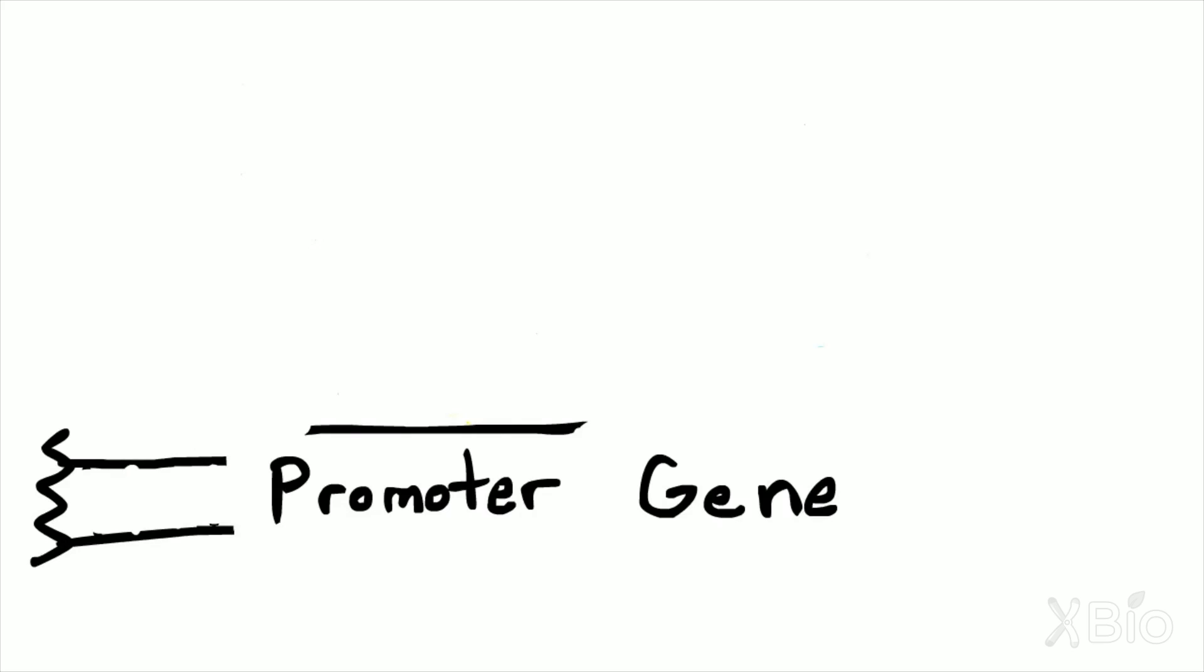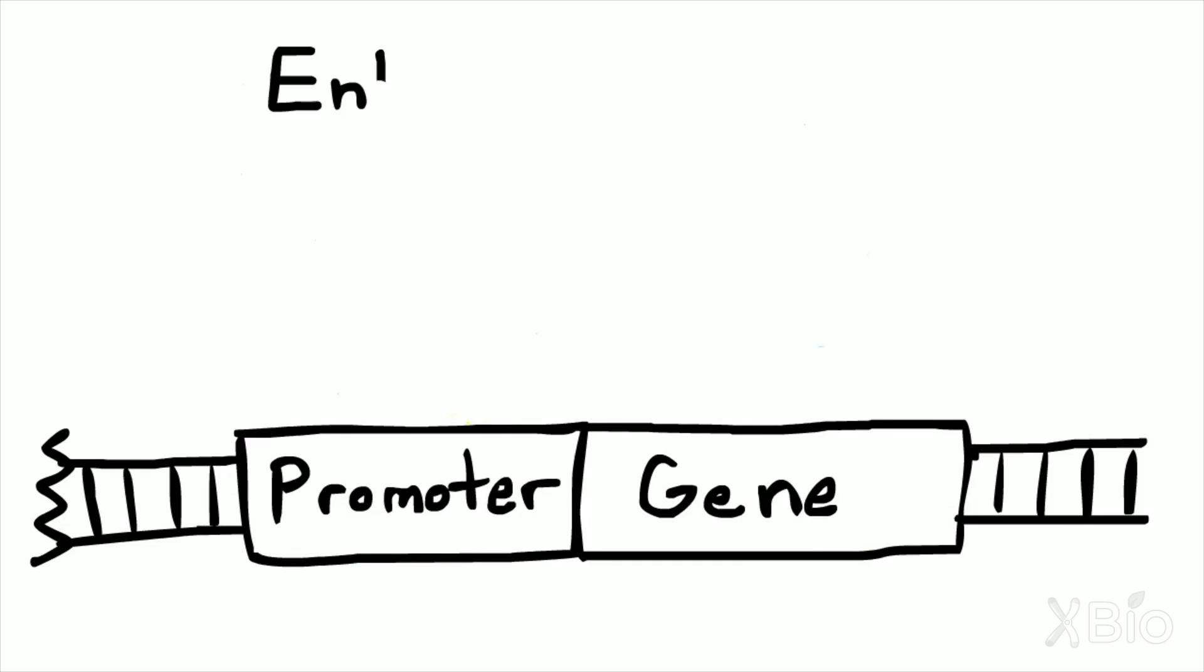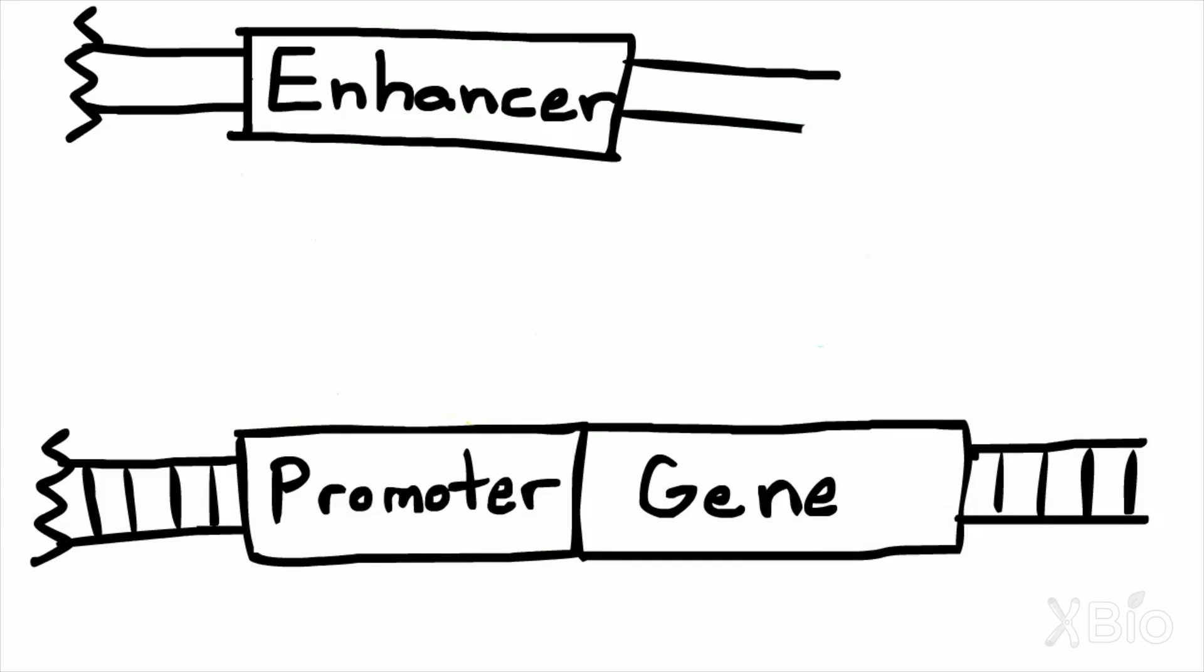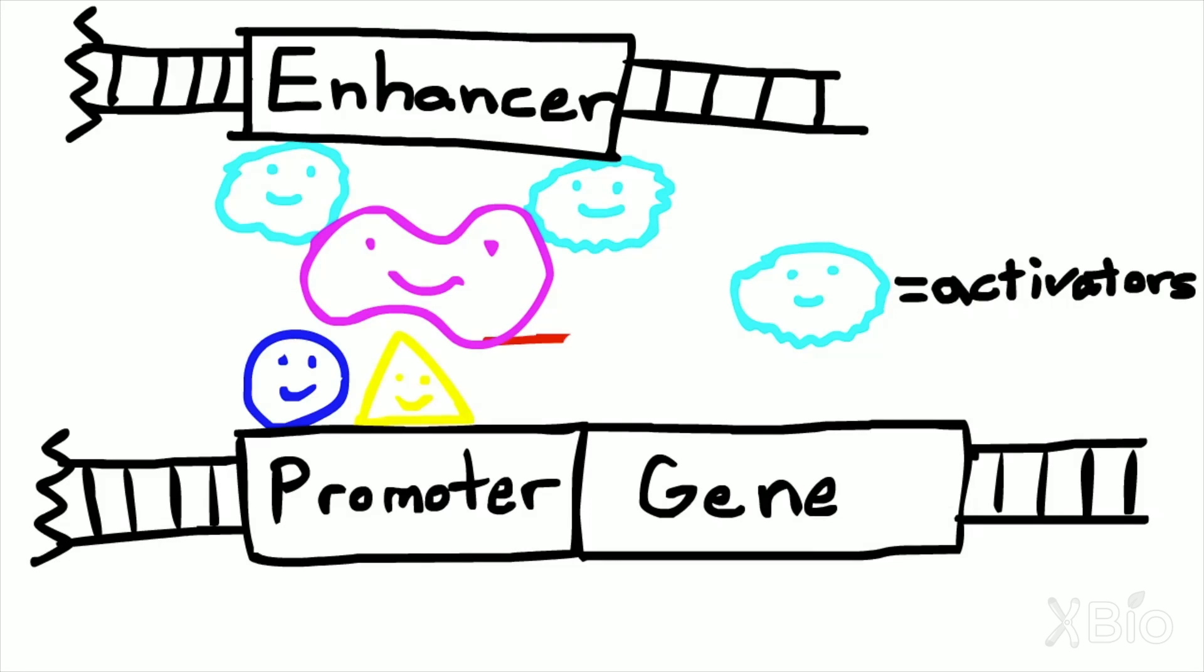In addition to the promoter, some genes make use of enhancer sequences. These are short sequences that recruit so-called activator proteins that help RNA polymerase work much more efficiently.